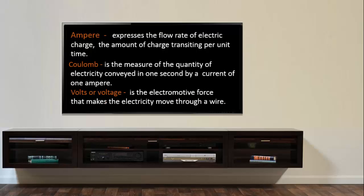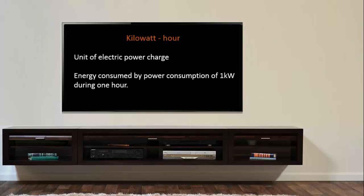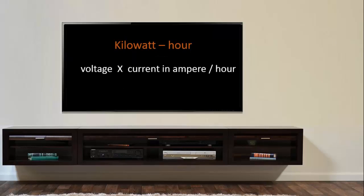Volt is the electromotive force that makes electricity move through a wire. Kilowatt-hour is the energy consumed by power consumption of one kilowatt during one hour. It can be calculated by multiplying the voltage with current in amperes per hour.